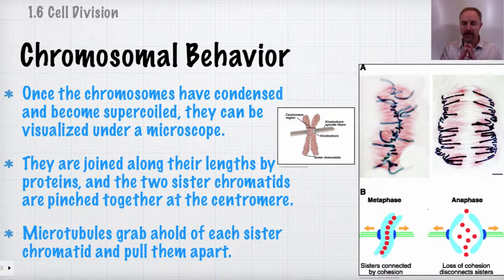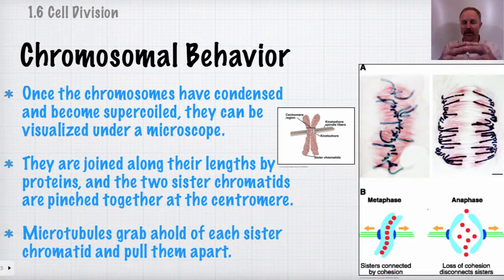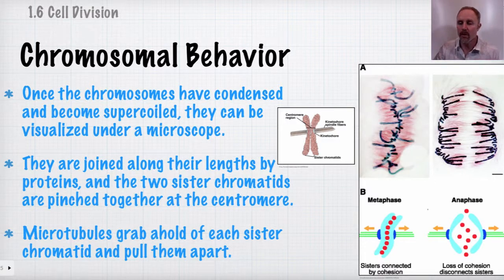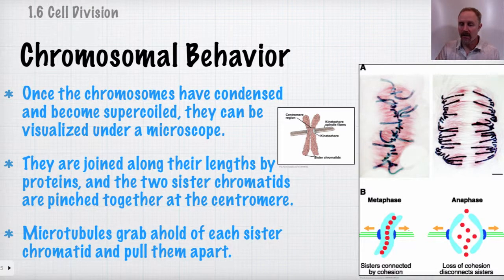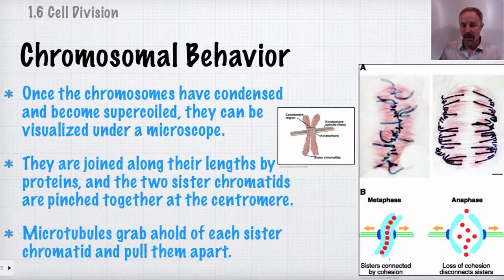Think of metaphase like fingers pressed together — once you see them pulling apart, the cell has entered anaphase. In anaphase, all the proteins that were firmly holding the sister chromatids together have broken down and the microtubules pull the chromosomes to opposite ends of the cell.